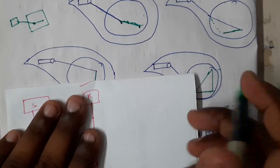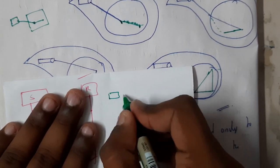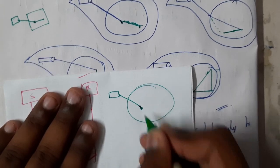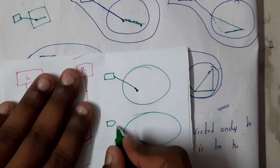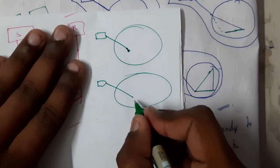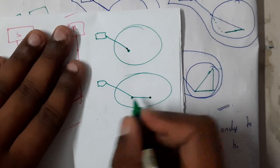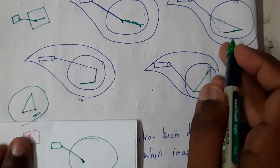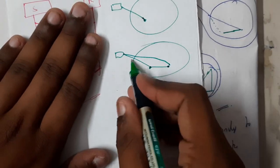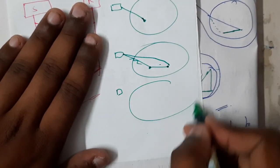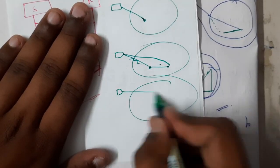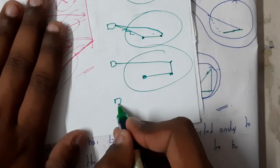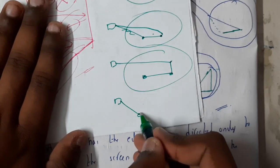So initially your gun will be here. In the second step the gun will be moving from this point to this point. After that, in the next step the gun will be here - that's two, three - and at the last step the gun will be back at the first point.